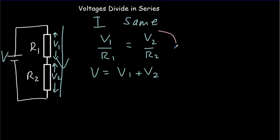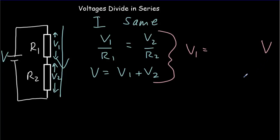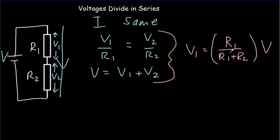With a little bit of algebra, you can show that the voltage V1 across R1 will be equal to a certain fraction of the battery voltage. That fraction is going to depend on the values of the resistors — it's going to be R1 divided by R1 plus R2. The ratio of that resistance compared to the sum of the two resistors.